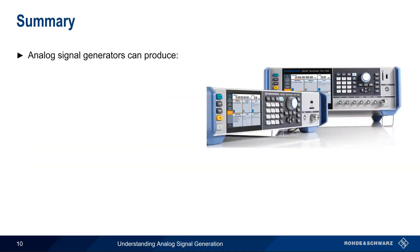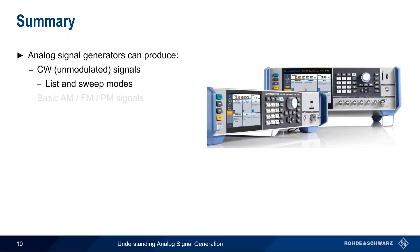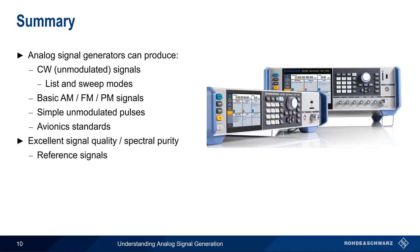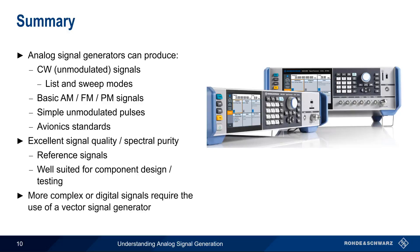In summary, analog signal generators can produce a variety of signal types. Simple CW or unmodulated signals are the core functionality of an analog signal generator, and both level and frequency of this signal can be easily and dynamically changed using list and sweep modes. Simple analog modulation, like AM, FM, and PM, is a feature of most analog signal generators, as is the creation of simple, unmodulated pulses. More complex, but still analog modulation includes avionic standards like VOR or ILS. Remember that analog signal generators excel at producing high-quality signals with excellent spectral purity. These signals can be used as references for measurements or substituted for things like local oscillators, but they're also very useful in the design and test of RF components. Analog signal generators offer a wide range of functionality, but more complex modulation schemes, or modulation of digital signals, typically require a vector signal generator. This concludes our short presentation, Understanding Analog Signal Generation.